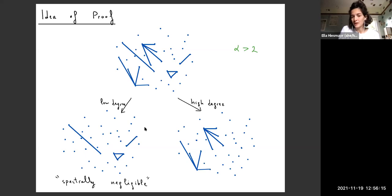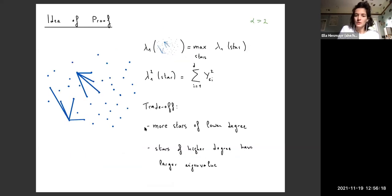We can then again show that the graph that only has low degree vertices is spectrally negligible. Now that we have this graph that only contains stars, what we need to use is that the largest eigenvalue of this graph of disjoint stars is just the maximum of all the eigenvalues over all the stars in the graph. We need to look at the eigenvalue of each star, which we know to be the square root of the sum of the squares of the edge weights. Once we use this result, we then need to trade off between the fact that we tend to have more stars of lower degrees, but the stars that have a higher degree tend to have a larger eigenvalue, because there's more weights that are summed up.